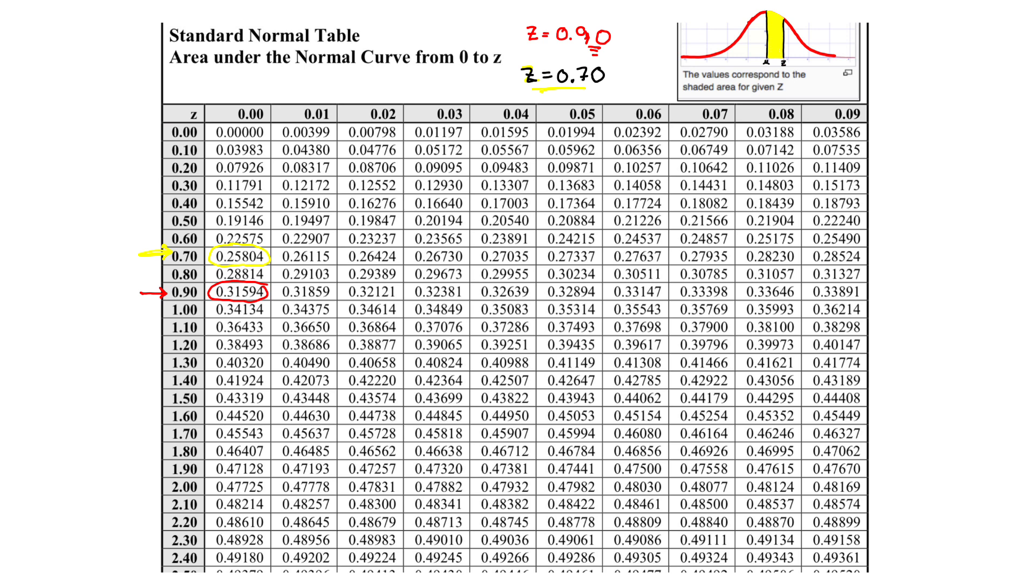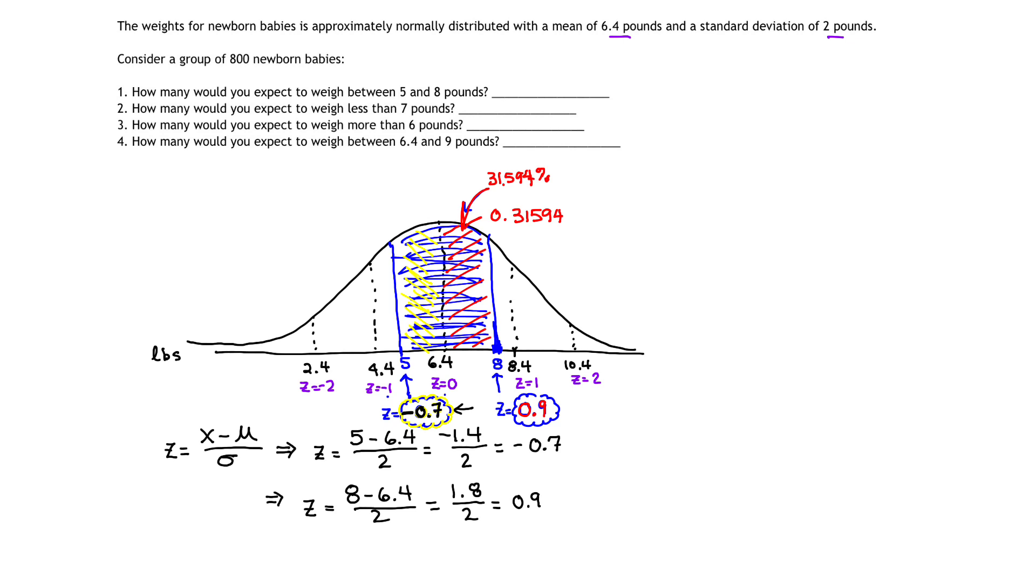So I'm going to go back to the previous page and get 0.25804. So this yellow band right here has a probability or an area corresponding to 0.25804, or if I like, 25.804% of the total area under the curve. And that's what falls in that yellow band.